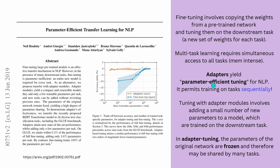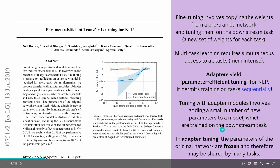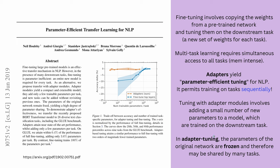Houlsby and co-authors came up with the idea of adapters — a method yielding parameter efficient tuning for NLP. A key feature is that it permits training fine-tuning on tasks sequentially. Adapters involve adding a small number of new parameters to a model, which are then trained on the downstream task. In adapter tuning, all parameters of the original pre-trained network are frozen — kept identical and shared across many tasks — and only the adapter parameters are trained for each downstream task.